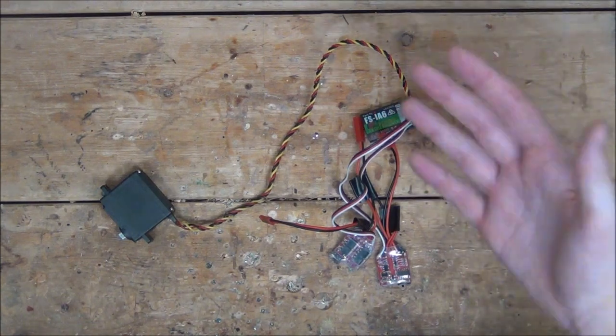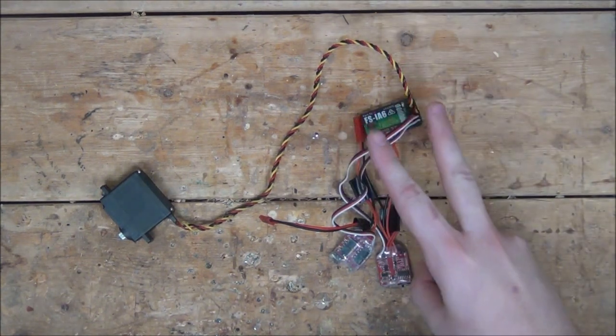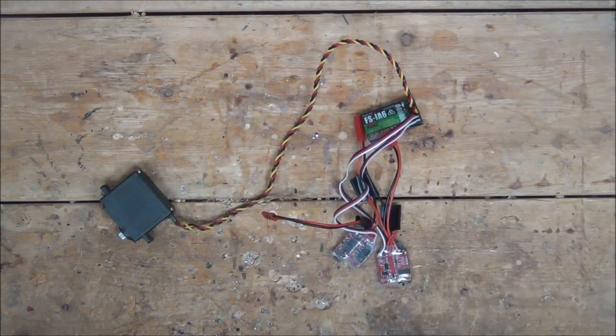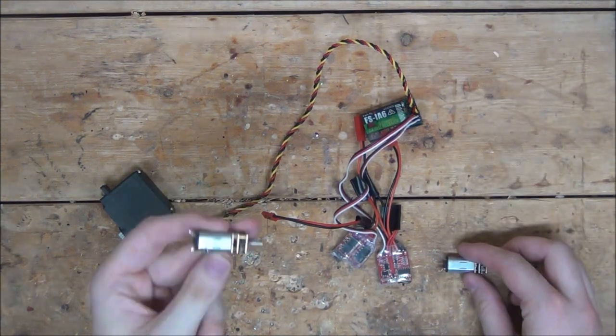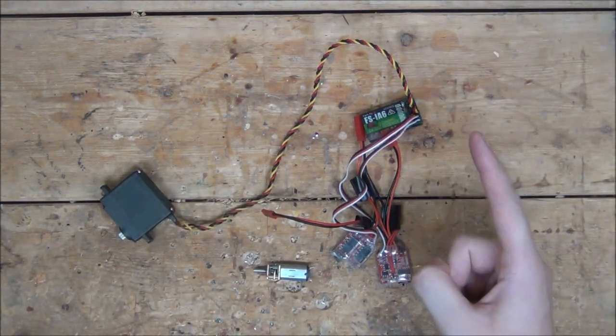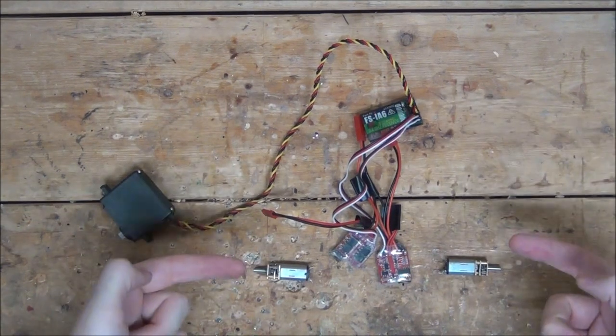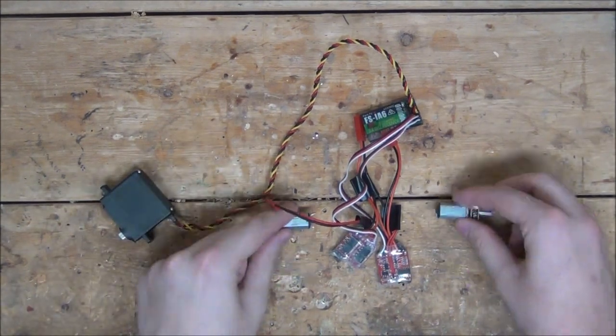Now, you probably already know this, but it is very important to have at least two drive ESCs, one for each side. One controls the right motor and one controls the left. Because if you only had one drive ESC, they couldn't spin in opposite directions. Therefore, they couldn't turn. They could only go forward and back.